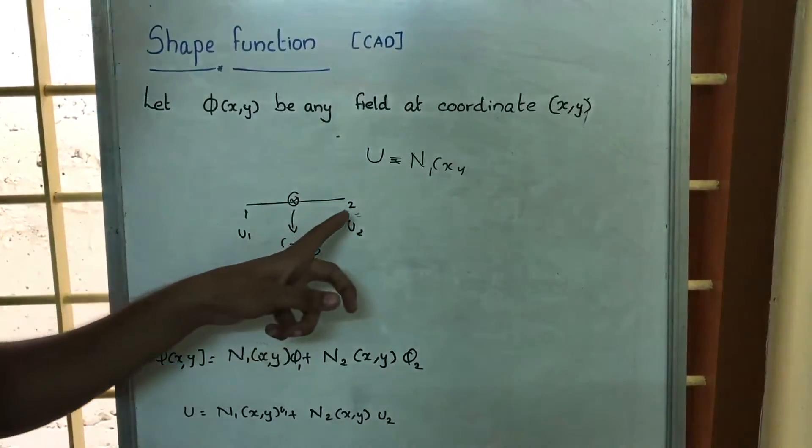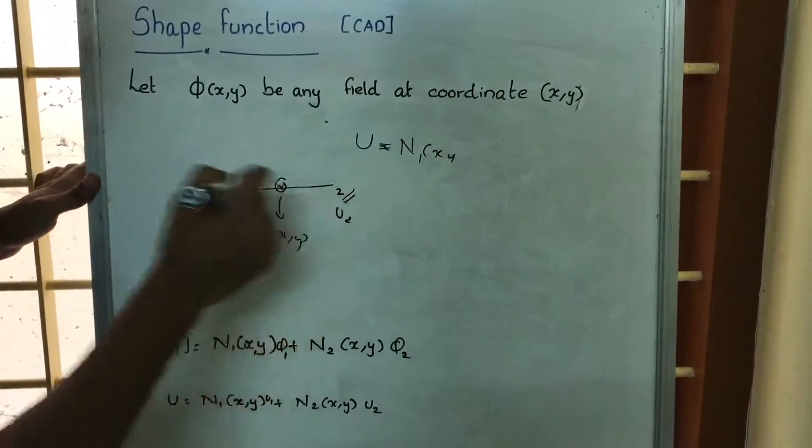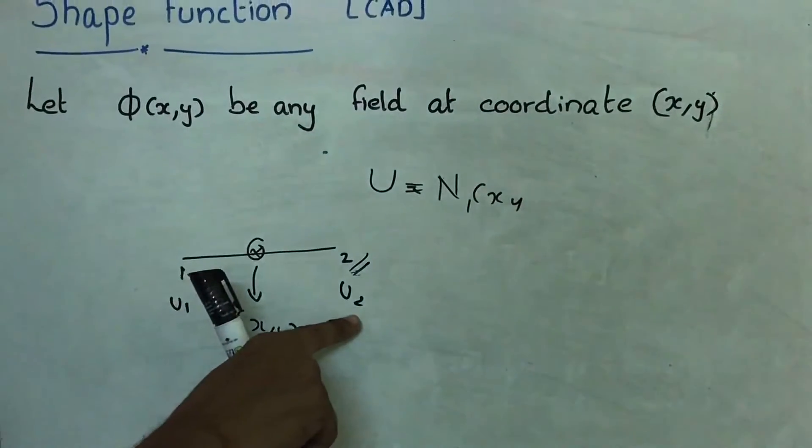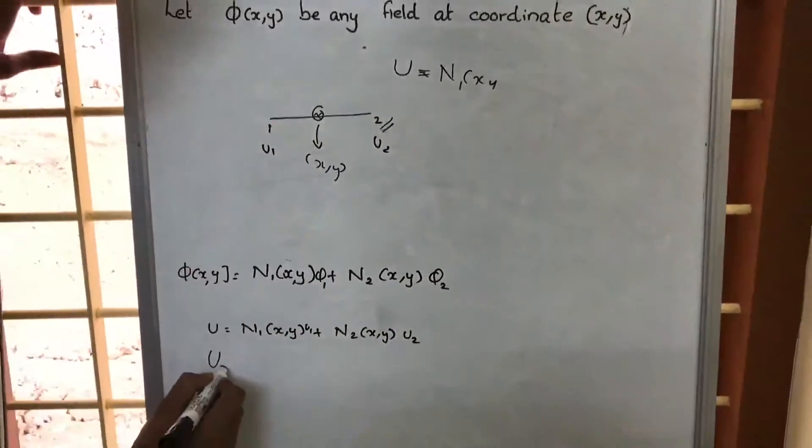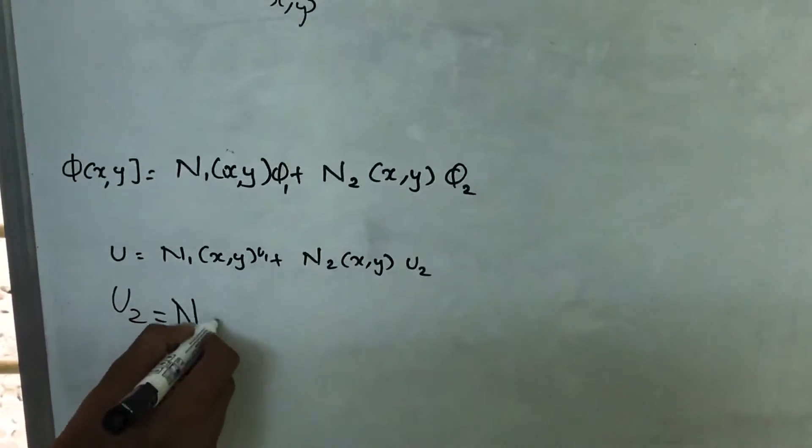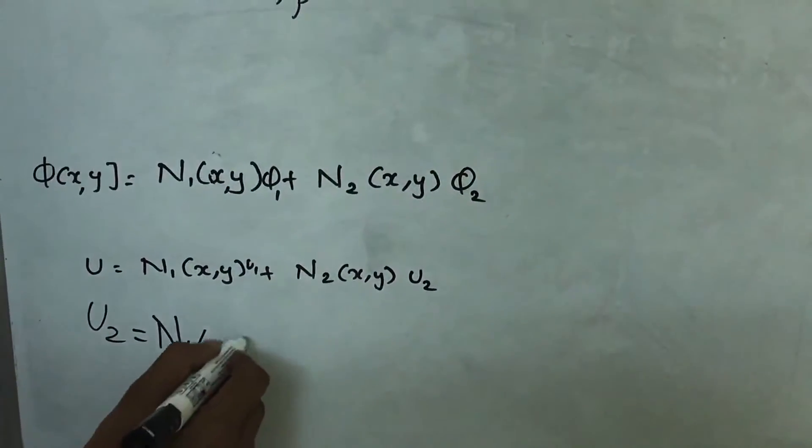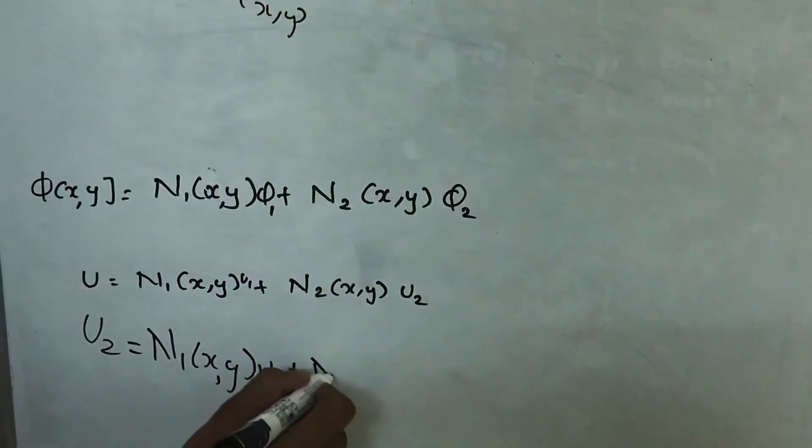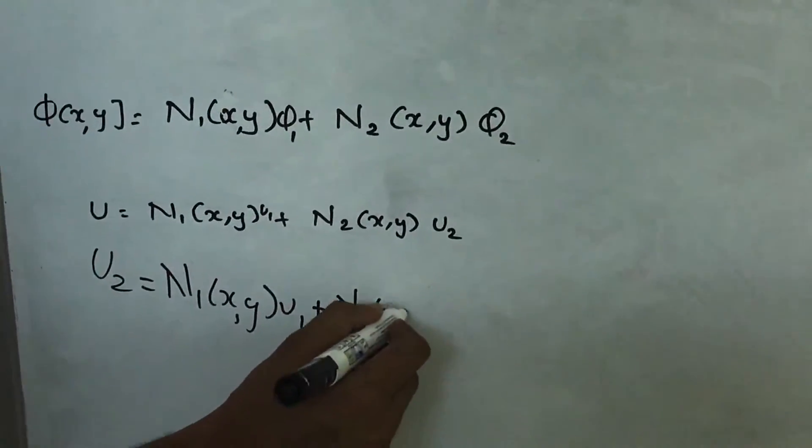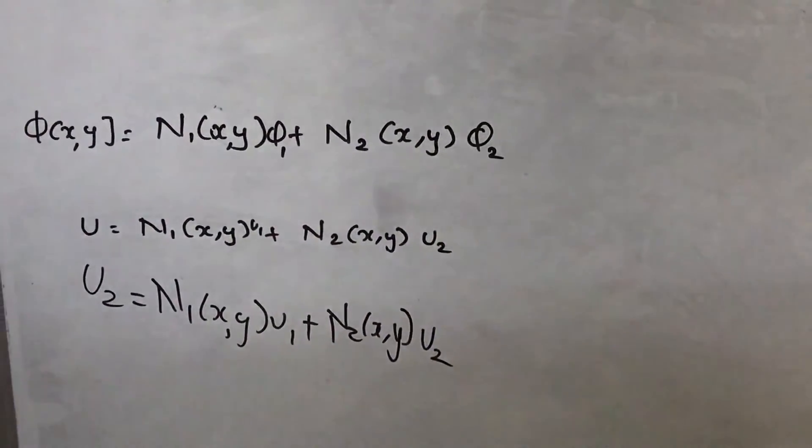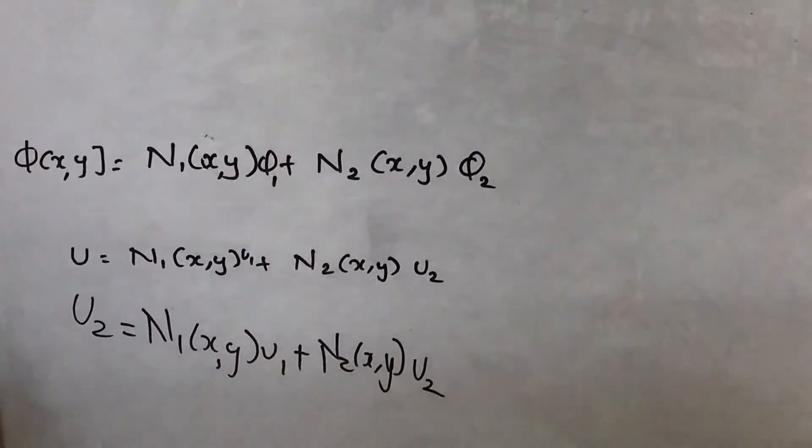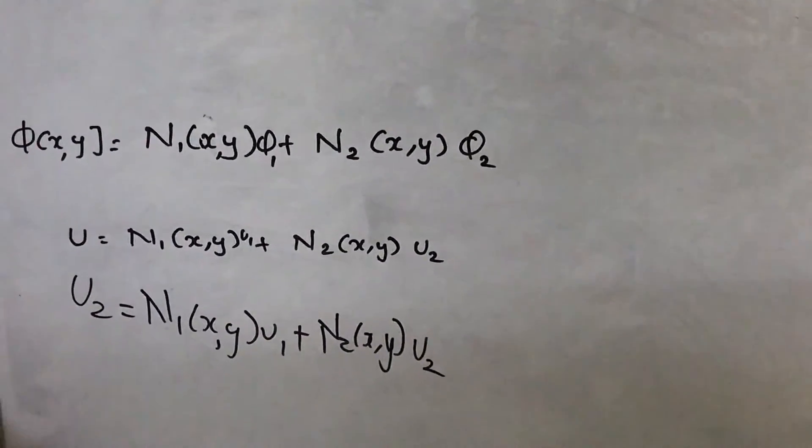suppose we are to find displacement at node 2. So we already know displacement at 2 is u2. So u2 = N1(x,y)u1 + N2(x,y)u2. So by simple logic, if you are thinking in a simple mathematical manner,